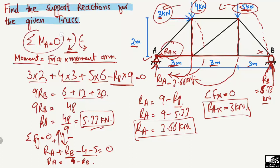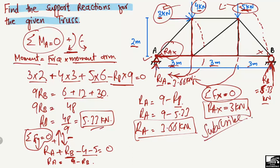Hope you guys understand how to find the different support reactions using equilibrium equations: summation of moments at any point equal to zero, and summation of vertical and horizontal forces equal to zero. You can find the support reactions for any kind of truss. Don't forget to subscribe to our channel for daily civil engineering videos. Thank you for watching.